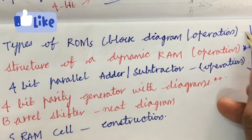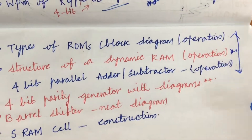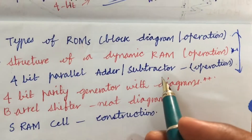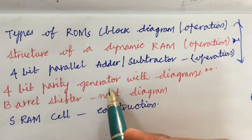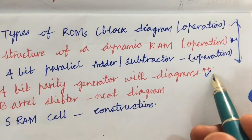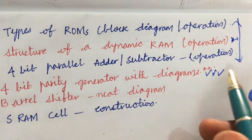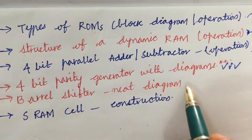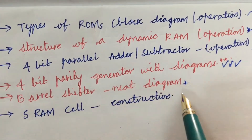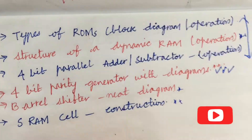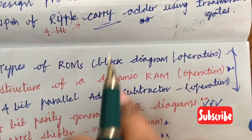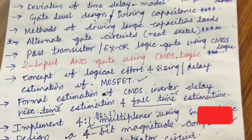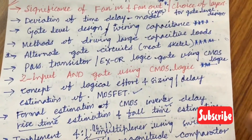4-bit parallel adder-subtractor and 4-bit parity generator with a diagram have been asked several times and we can expect these again. Barrel shifter with its neat diagram and SRAM cell construction with a neat diagram are also among the important questions taken into consideration by referring to previous year question papers as per the JNTUH syllabus.